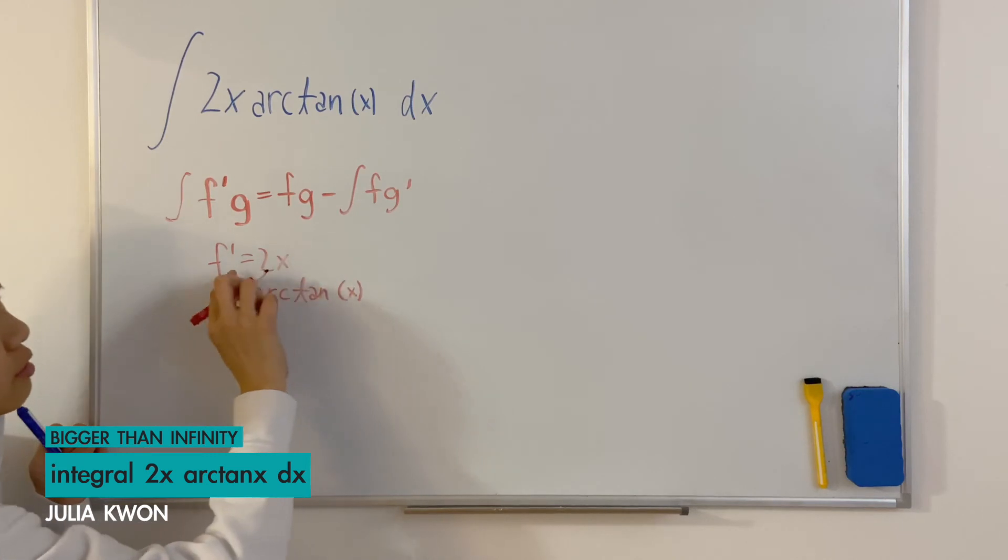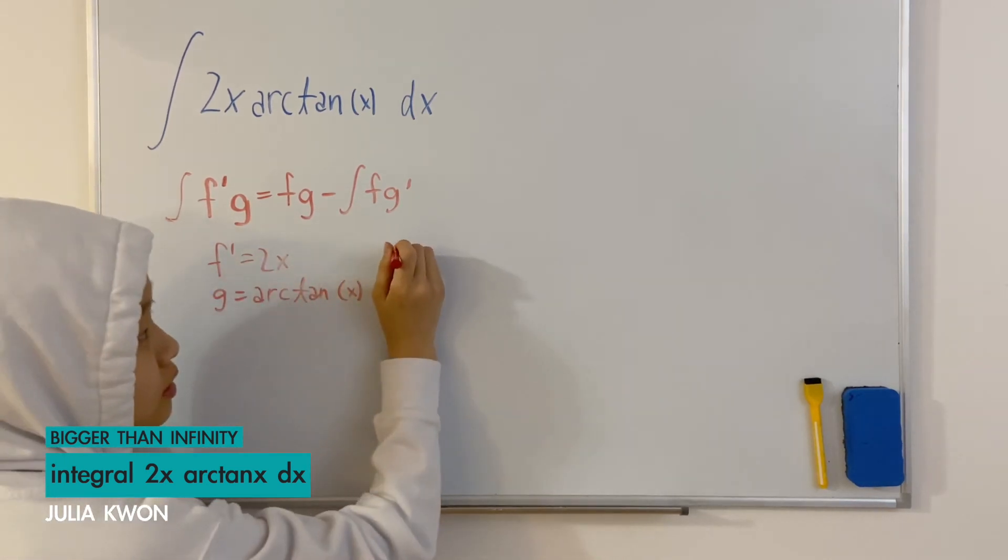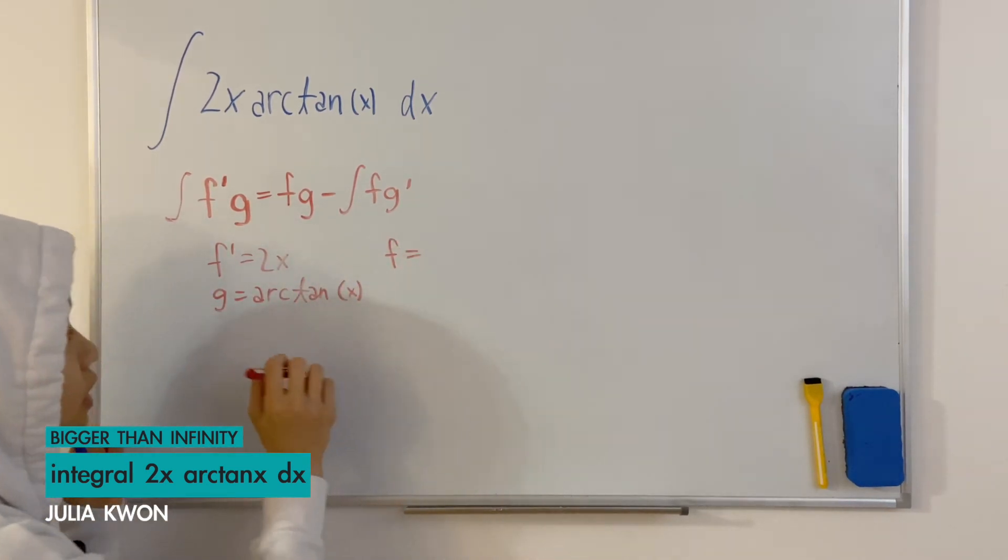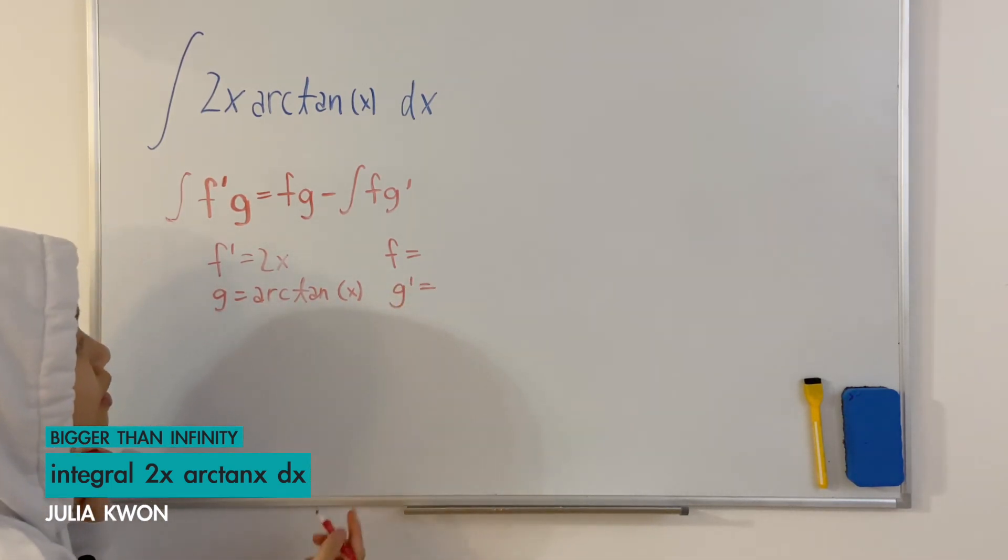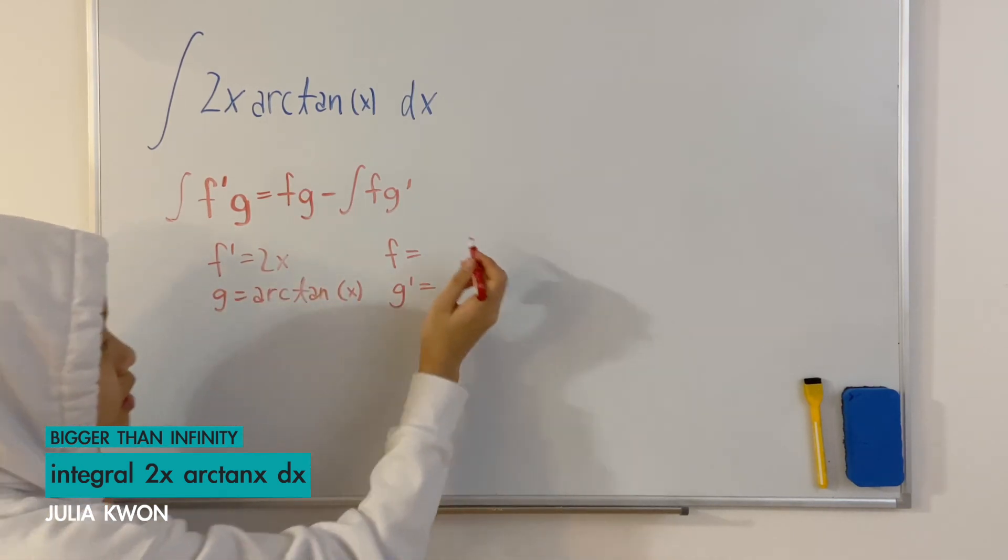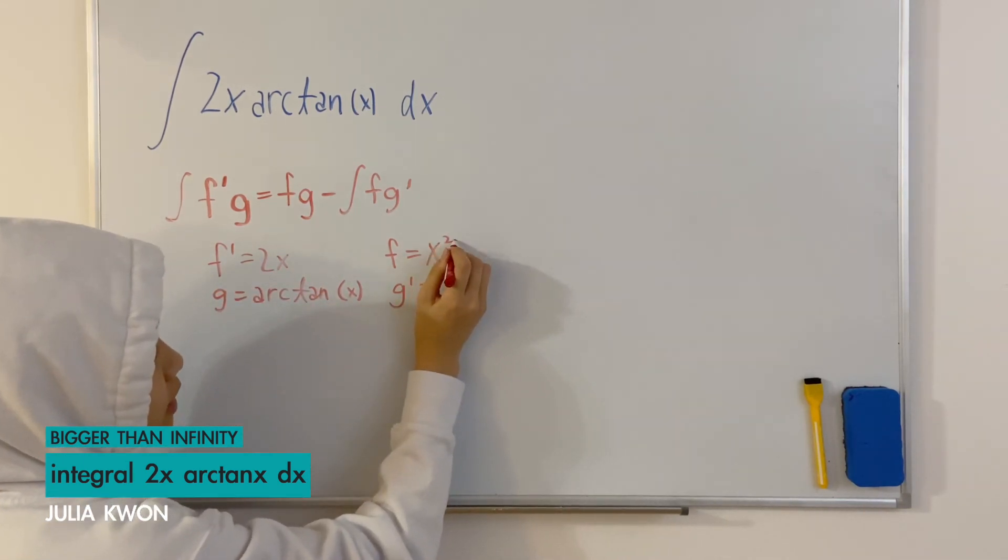Now using the f prime we can find what the f is and using g we can find what g prime is. The f would be the integral of 2x which would be x squared.